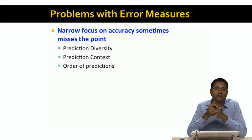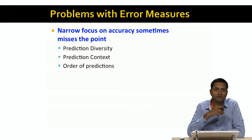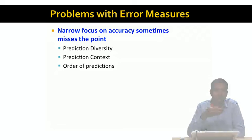Finally, the order of predictions also turns out to be hugely important. For example, when there's a series of books or movies, you want to recommend items that are earlier in the sequence ahead of items that are later in the sequence.